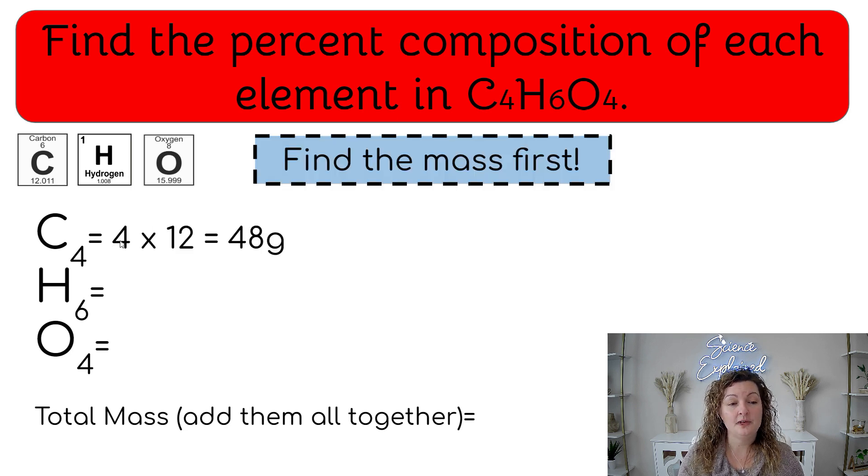So now we need to multiply how many we have by the mass on the periodic table. So you're going to see that we multiplied four times 12 for carbon. And essentially we're getting the molar mass of the carbon for the C4, right? So 48 grams. We're going to do the same thing with hydrogen. We're going to do six times the one that we are seeing on the periodic table. It's okay to round. That's perfectly fine.